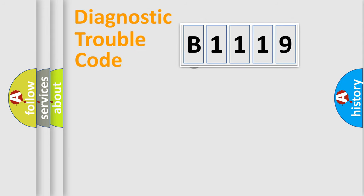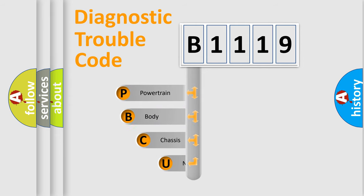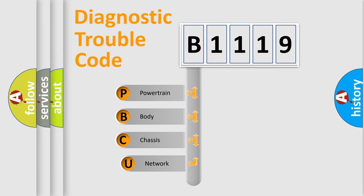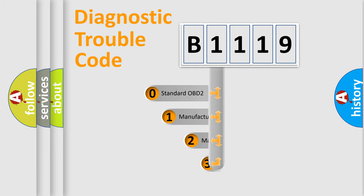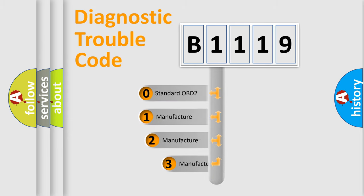Let's look at the history of diagnostic fault code composition according to the OBD2 protocol, which is unified for all automakers since 2000. We divide the electric system of an automobile into four basic units: Powertrain, Body, Chassis, and Network. This distribution is defined in the first character of the code.